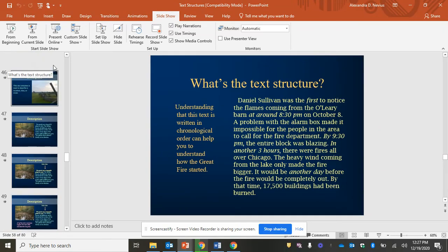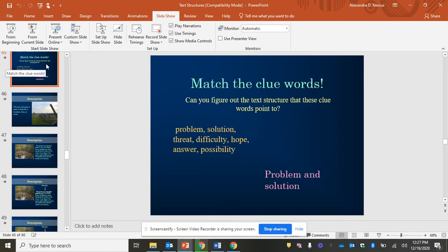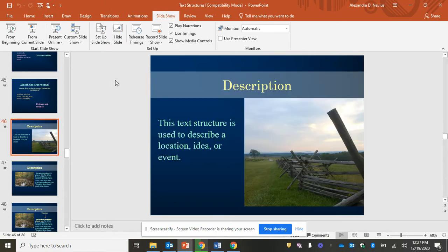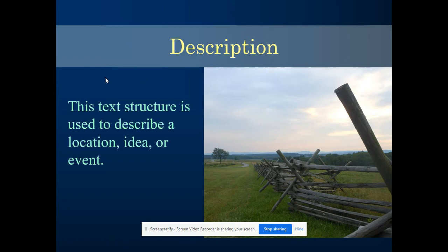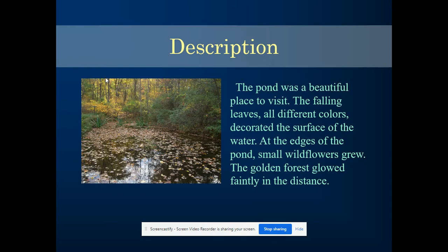Bryn, we are going to tackle another text structure today, and this text structure is called description. Description is a little bit trickier because you really have things that are written about in the text. A description text structure is used to describe a location, idea, or event, so it's going to give us a lot of details. This text has a nice photograph, a nice text feature to help us understand a little better.